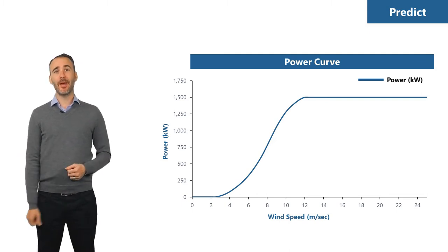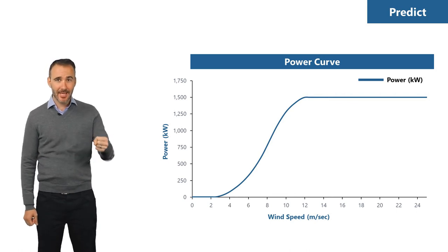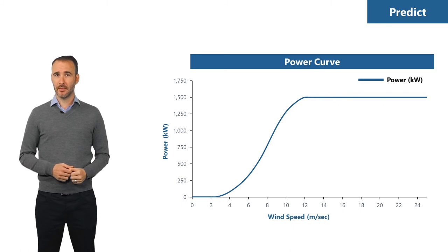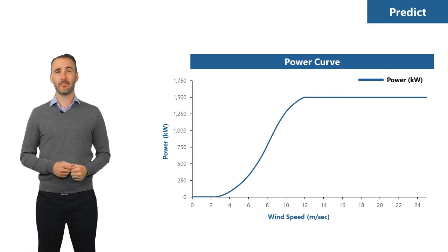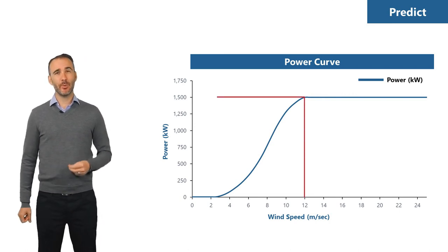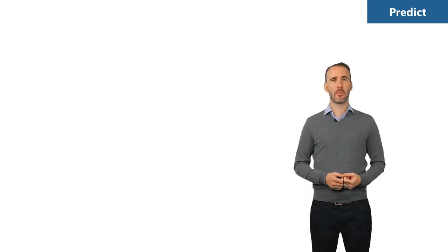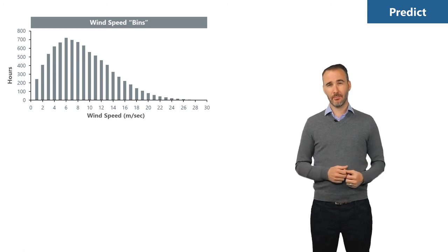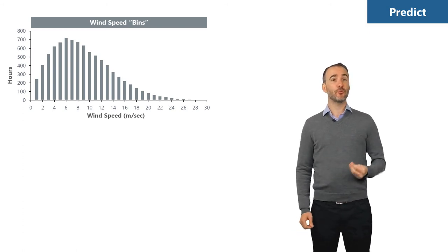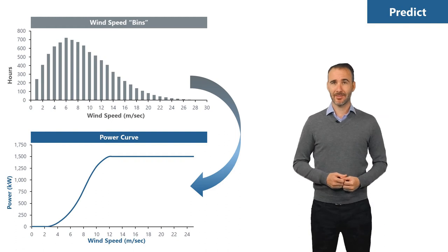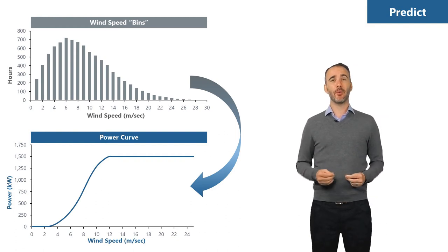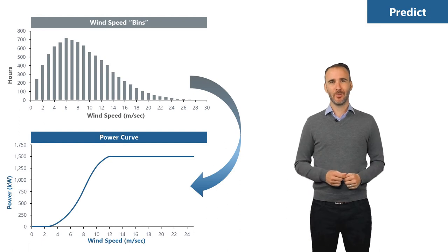For example, if the wind is expected to blow for one hour at 12 meters per second, the turbine would generate 1.5 megawatt hours of electricity. We repeat this process over the entire year: dividing the wind speed distribution into bins showing how many hours per year the wind blows within each speed range, then running each bin through the power curve to calculate megawatt hours. Summing across all bins gives a forecast for annual energy output to use in the financial model.